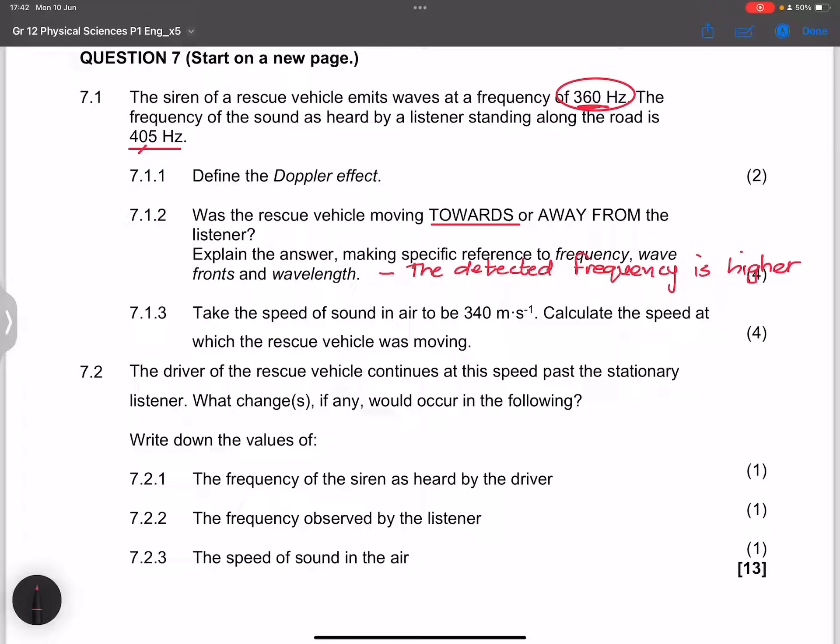And so that means that the wave fronts are closer together, closer to each other I should say. And they said wavelength. So remember that the wavelength is actually shorter. So therefore, the wavelength is shorter. So that is how we're going to explain that.